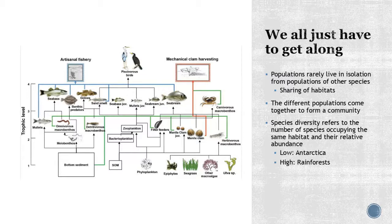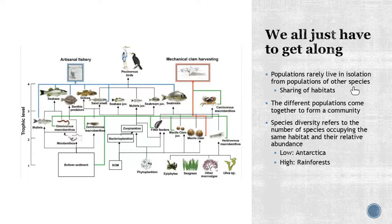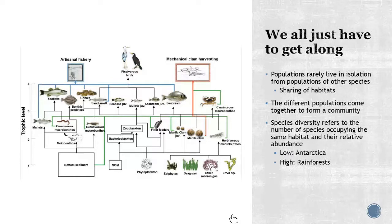Populations rarely live in isolation, so you're often having to deal with other species. You're going to be sharing space and sharing habitats. Different populations come together to form the community, and the diversity you'll see depends on the habitat. Certain areas will have a lot more diversity than others — an example is Antarctica, where not a lot of species are adapted to survive.